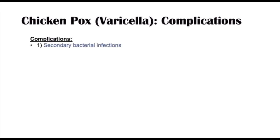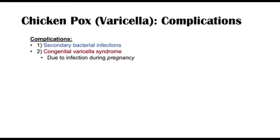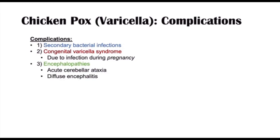Complications of chickenpox include secondary bacterial infections — if the skin barrier is broken, we can have infections like impetigo. We can also get congenital varicella syndrome, which can occur if there is an infection during pregnancy. Other complications include encephalopathy — some individuals can have acute cerebellar ataxia and diffuse encephalitis. Pneumonia is a very rare complication but can lead to hospitalizations.